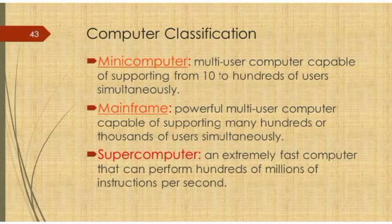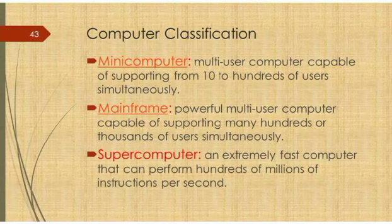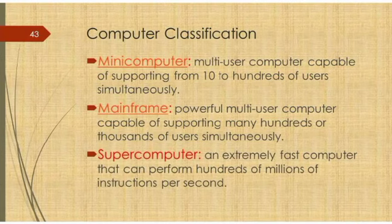Now, what is a supercomputer? A supercomputer is an extremely fast computer that can perform hundreds of millions of instructions per second. It is extremely fast and can perform hundreds of millions of instructions per second. You can see that it is the most powerful among all the types of computers we have.